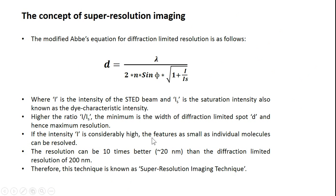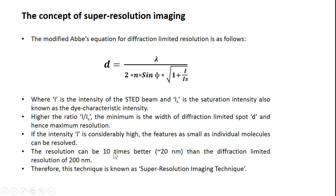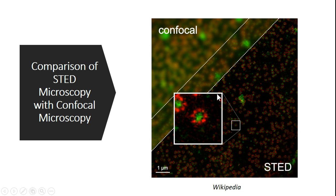The Abbe's criterion, lambda upon two times the numerical aperture, now has one more term in the denominator: the square root of one plus I divided by Is, where I is the intensity of the STED beam and Is is the saturation intensity. The higher the ratio of I to Is, the narrower the diffraction limited spot. When you increase the incident intensity of the STED beam, you get a narrower focal spot, achieving resolution approximately 20 nanometers — ten times better than the diffraction limited 200 nanometers.